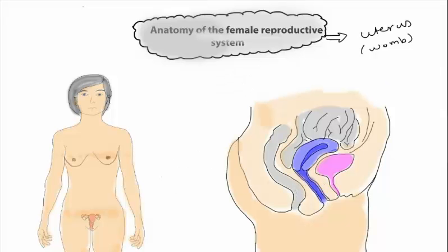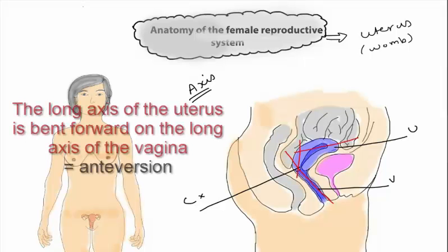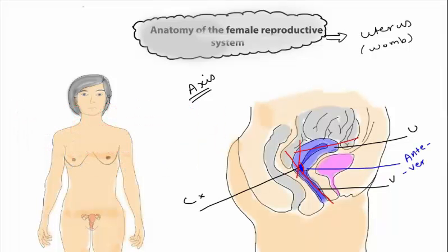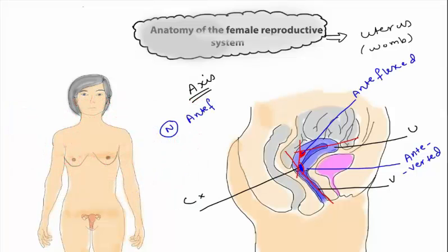Now let's discuss the axis of the uterus. This is the vagina, this is the cervix, and this is the uterus. When the long axis of the uterus is bent forward on the long axis of the vagina, this is called anteversion. When the long axis of the body of the uterus is bent forward on the long axis of the cervix, we call this anteflexion. So the normal position of the uterus is anteverted and anteflexed.